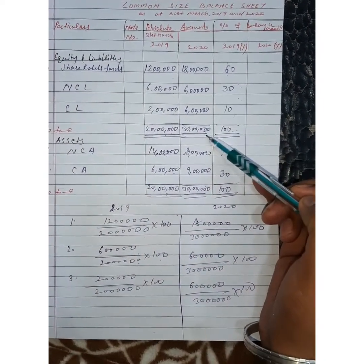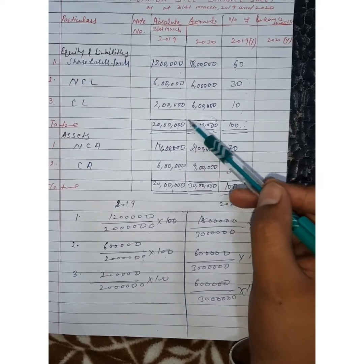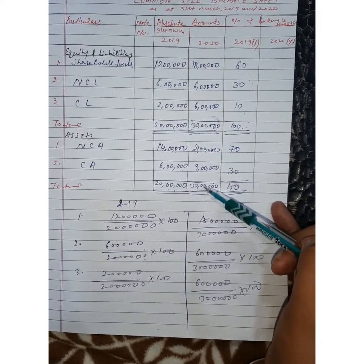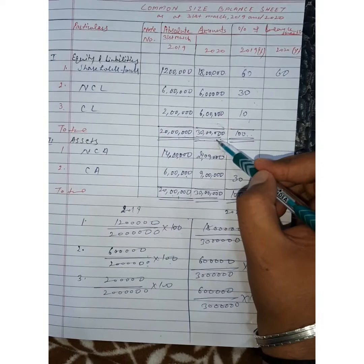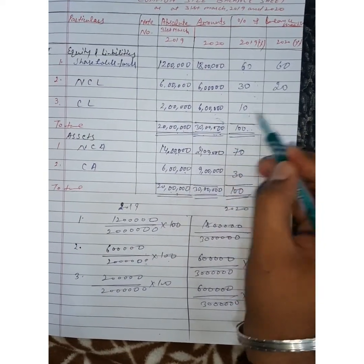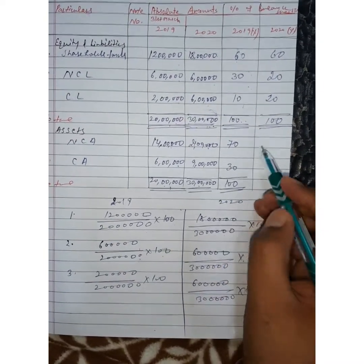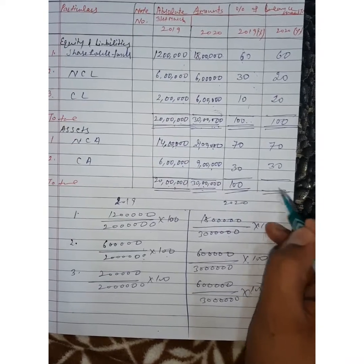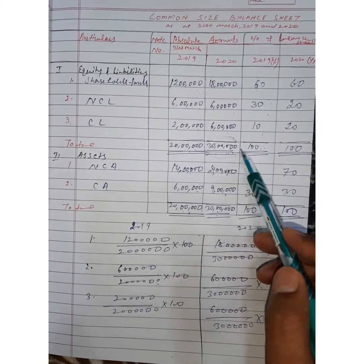Same 2020 का data arrange करेंगे अब। Percentage उस साल की balance sheet के total के basis पर — that means उस साल base amount 30 lakh। 18 lakh by 30 lakh into 100 — 60%; 6 lakh by 30 lakh into 100 — 20%; 6 lakh by 30 lakh into 100 — 20%; total 100%। 21 lakh by 30 lakh — 70%; 9 lakh by 30 lakh — 30%; total 100%।